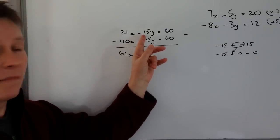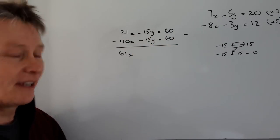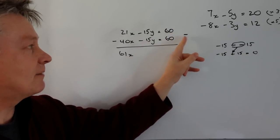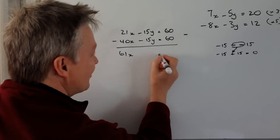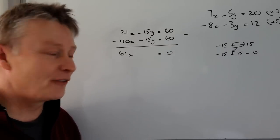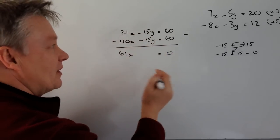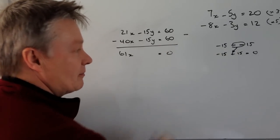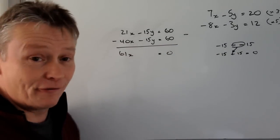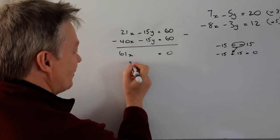Then as we said before, minus 15 minus minus 15, well, that gets rid of it, becomes zero. And then I've got 60 minus 60, and that equals zero as well. So it's fairly straightforward once you get to this point and you appreciate that you're minusing and it becomes a plus. Well, 61 lots of x is nothing. Therefore, one lot of x is going to be nothing. So x equals zero.